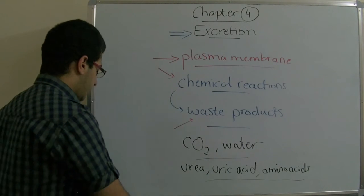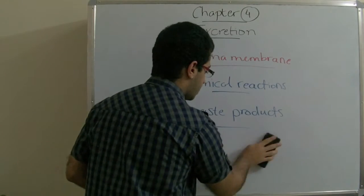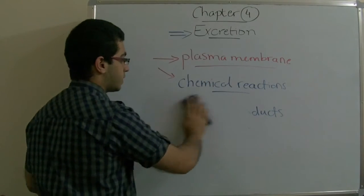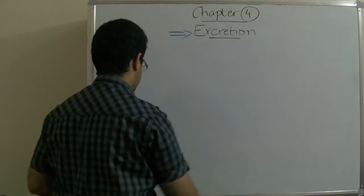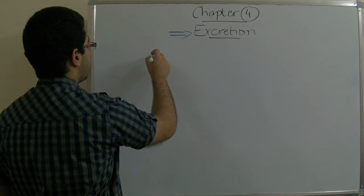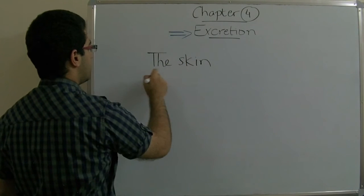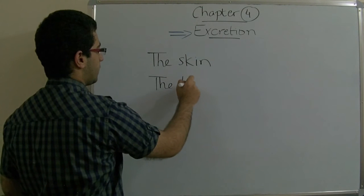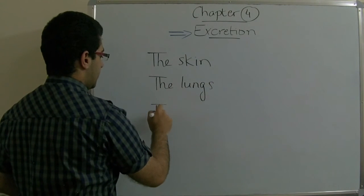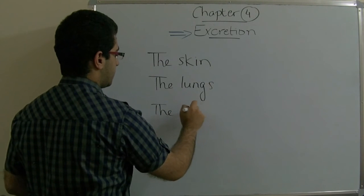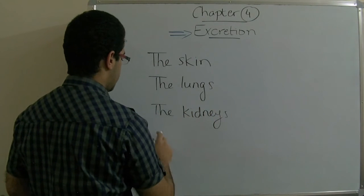There are various organs inside the body which are responsible for the excretion process. For example, we have the skin, the lungs, the kidneys, and the liver.